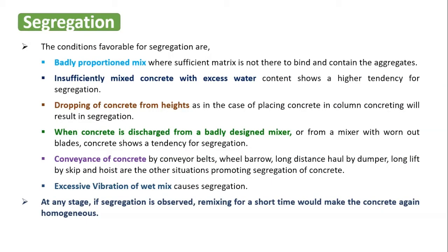We need to find out what is actually responsible for segregation so that we can reduce it. The first reason is a badly proportioned mix. We know that the constituent materials of concrete — cement, fine aggregate, coarse aggregate, and water — are mixed in a particular proportion. You cannot simply add them in whatever quantity you want.